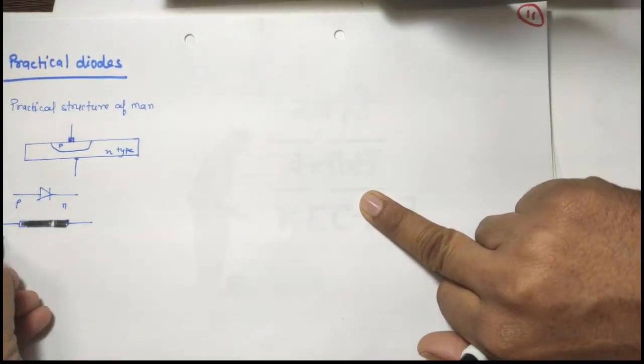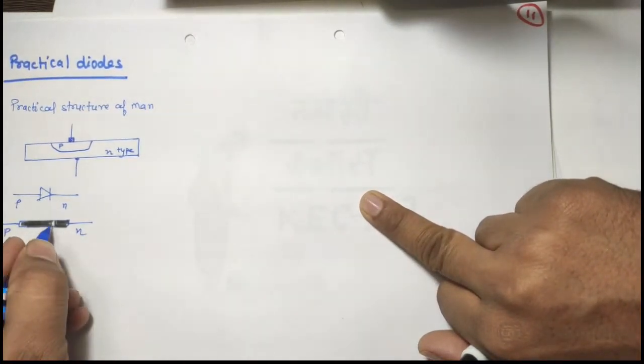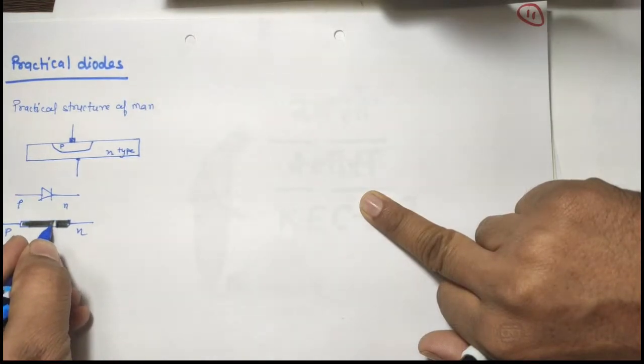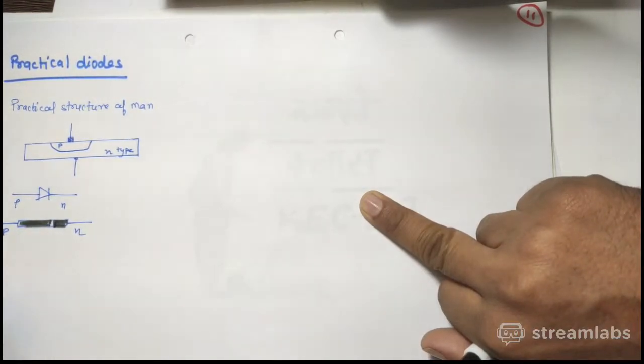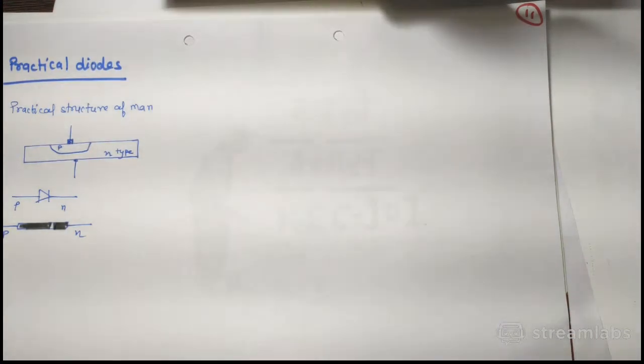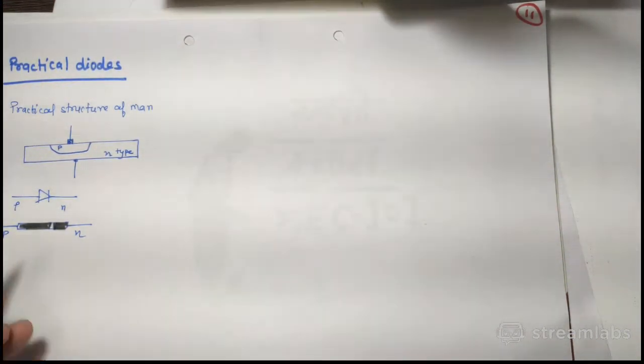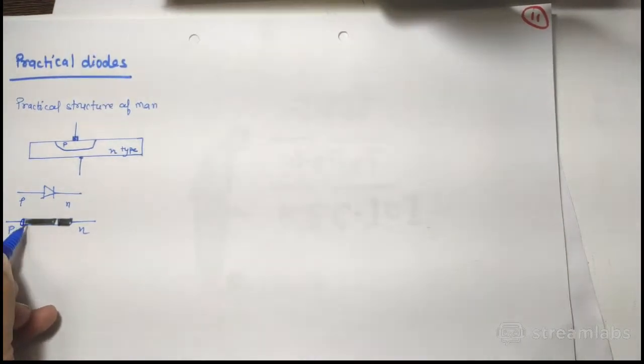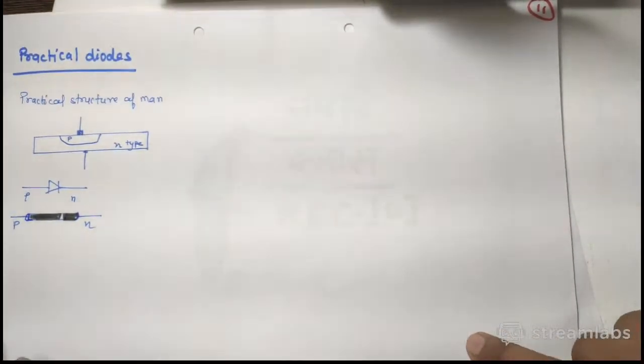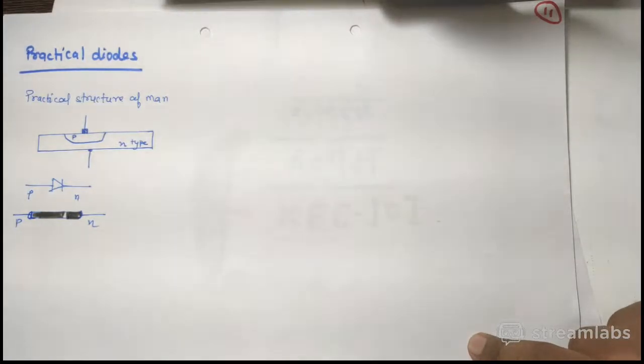And you can see this strip is more towards the n-side of the material. So this is a real appearance of diode. It is a cylindrical kind of structure and in this structure you can see p-type is more larger as compared to this one.